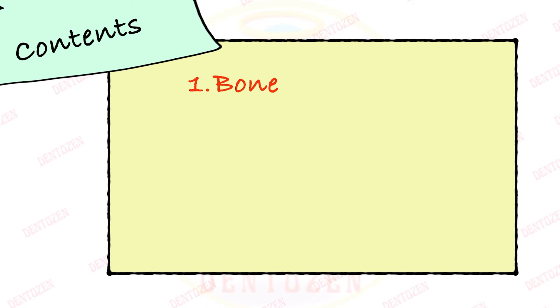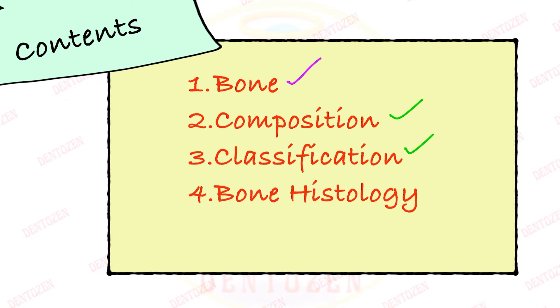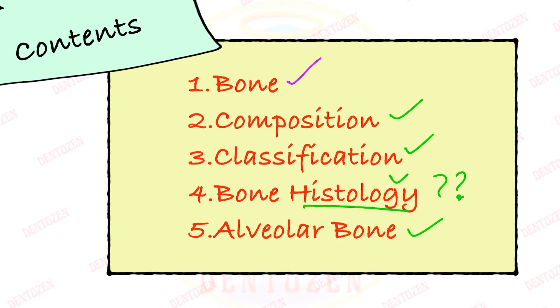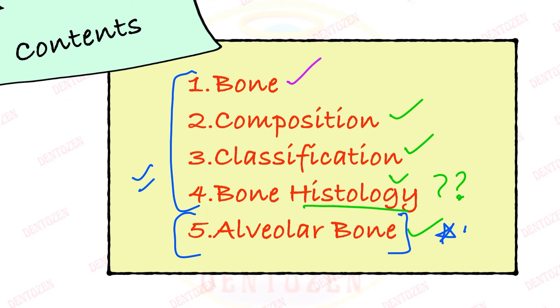So first we'll understand what is bone, what are its functions, what is it made up of, how is it classified, how it appears under the microscope — that is its histology — and finally what is alveolar bone. In this video we are going to cover the first four sections so that you can understand alveolar bone in a better way in the next video. Don't forget to watch that video as well.